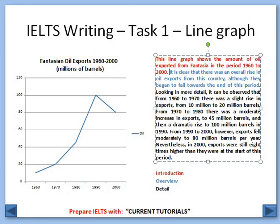Overall there is a rise because at the start of the period it was 10 million barrels and at the end of the period it was 80 million barrels. So overall there was a rise in exports but at the end of the period it tends to decline. Looking in detail, it can be observed that from 1960 to 1970 there was a slight rise from 10 to 20 million barrels. From 1970 to 1980 there was a moderate increase to 45 million barrels.